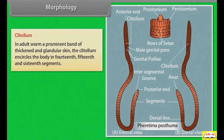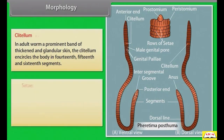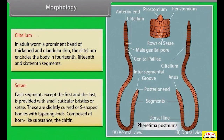In an adult worm, a prominent band of thickened and glandular skin called the clitellum encircles the body in the 14th, 15th, and 16th segments. Each segment except the first and the last is provided with small cuticular bristles or setae. These are slightly curved or S-shaped bodies with tapering ends, composed of chitin.